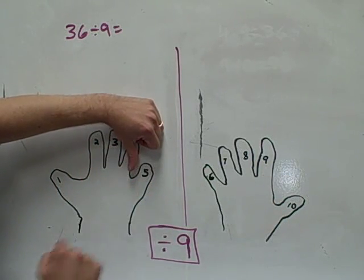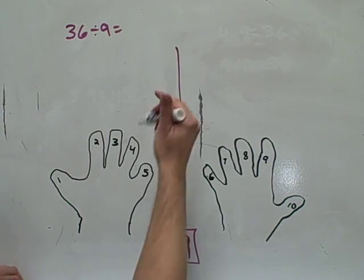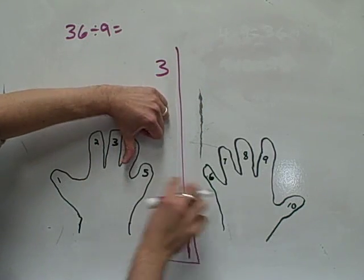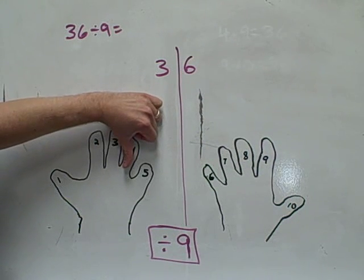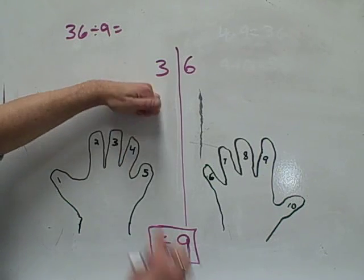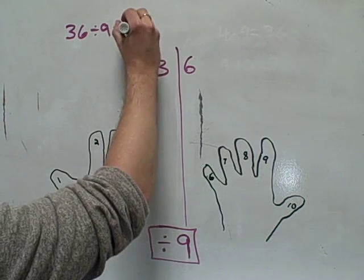1, 2, 3... 1, 2, 3, 4, 5, 6. Okay, so now that you've got 36, then all you have to do is figure out what finger you put down. And that's pretty simple. It was the fourth one. And the answer is 4.